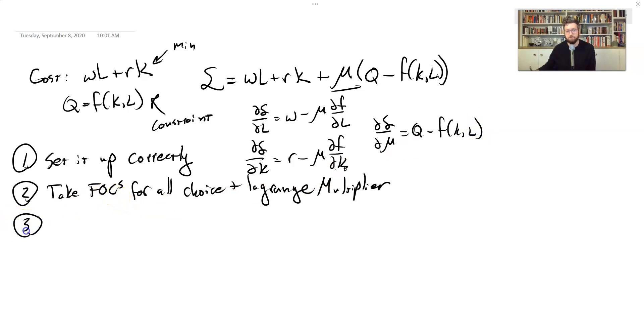Now we go to step three, which is set the first order conditions equal to zero. Same as before. And then we go to step four, solve the system.